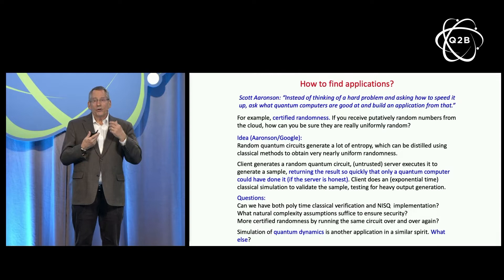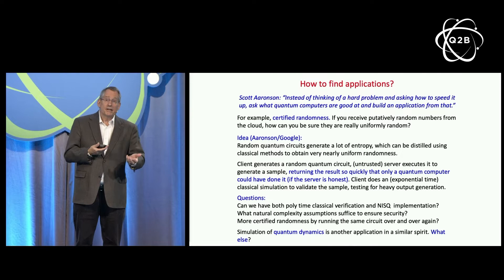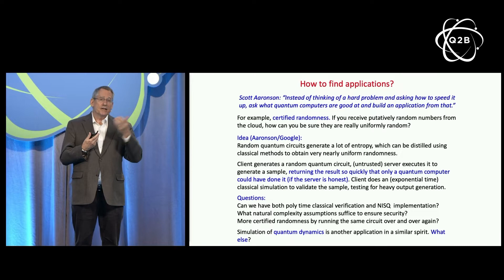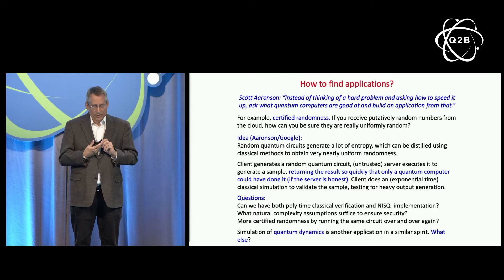We know that random quantum circuits generate a lot of entropy. With classical methods, we can distill that entropy to nearly uniform randomness. The key is that if results are returned so quickly, it couldn't have been done by a classical computer. Then at his leisure, the client can verify heavy output generation to confirm the quantum circuit really was executed. There are many interesting open questions about how to take this idea further.